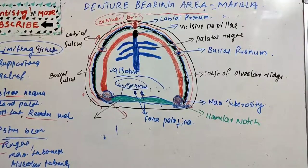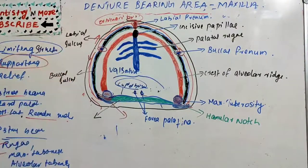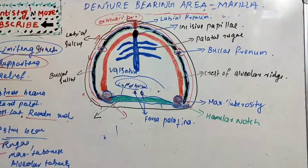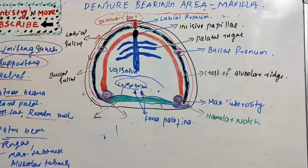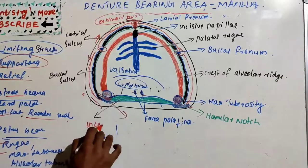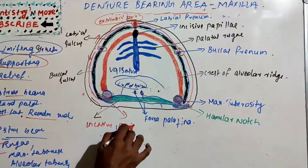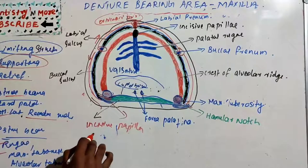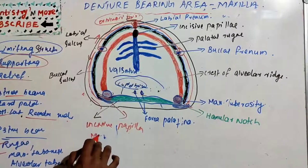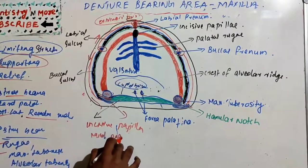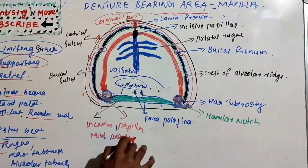The relief areas of the maxilla include the incisive papillae, mid palatine raphe, fovea palatine, palatine torus if present, and the rugae area.